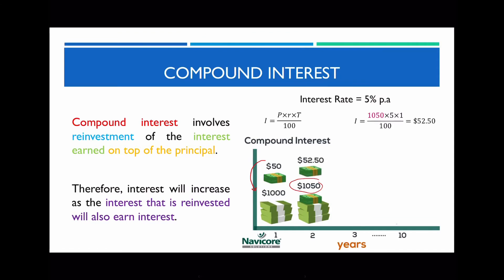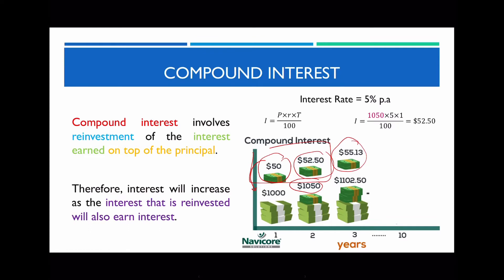Notice that the amount of interest earned in the second year is higher than the first year. The total interest over two years is just the sum of those two amounts. Similarly, the interest in the third year is higher than the previous years because the reinvested interest also earns interest. If you keep doing this, it results in exponential growth.